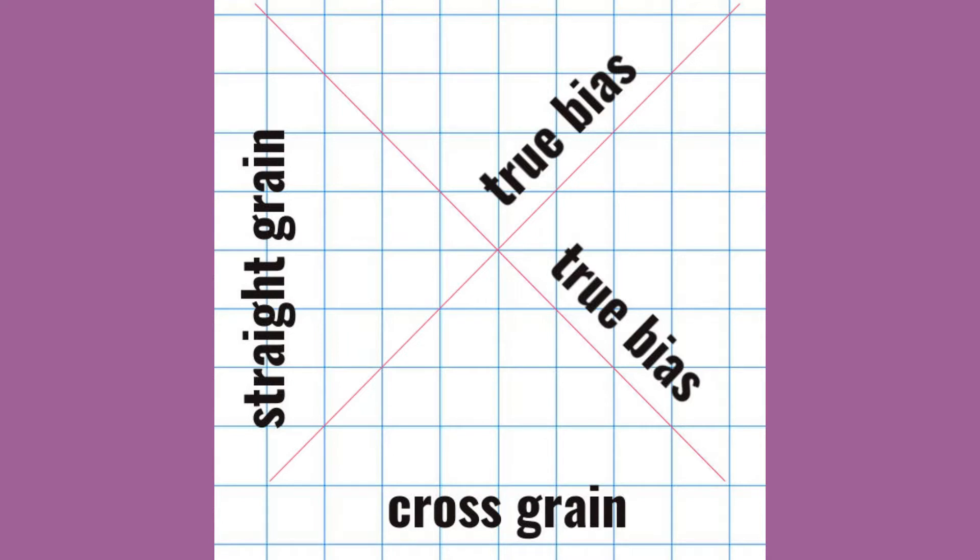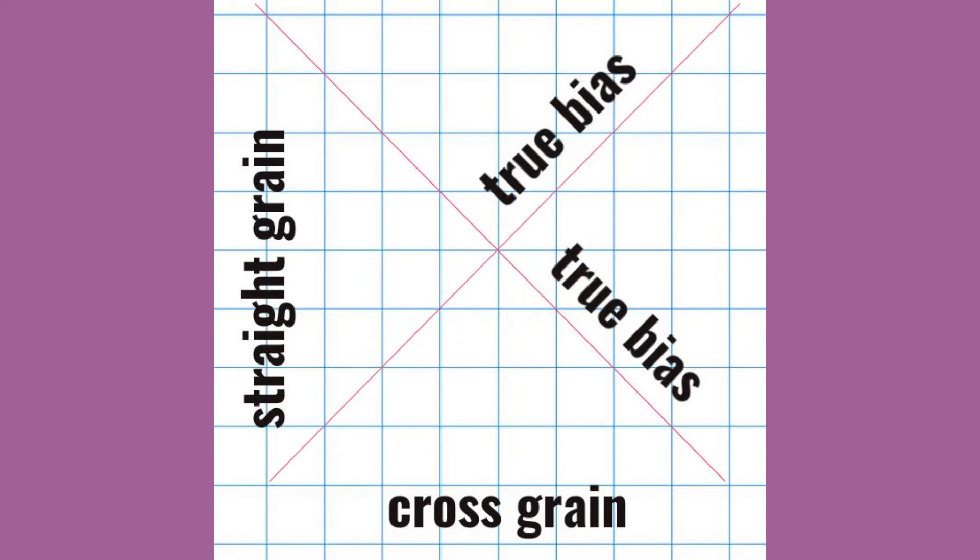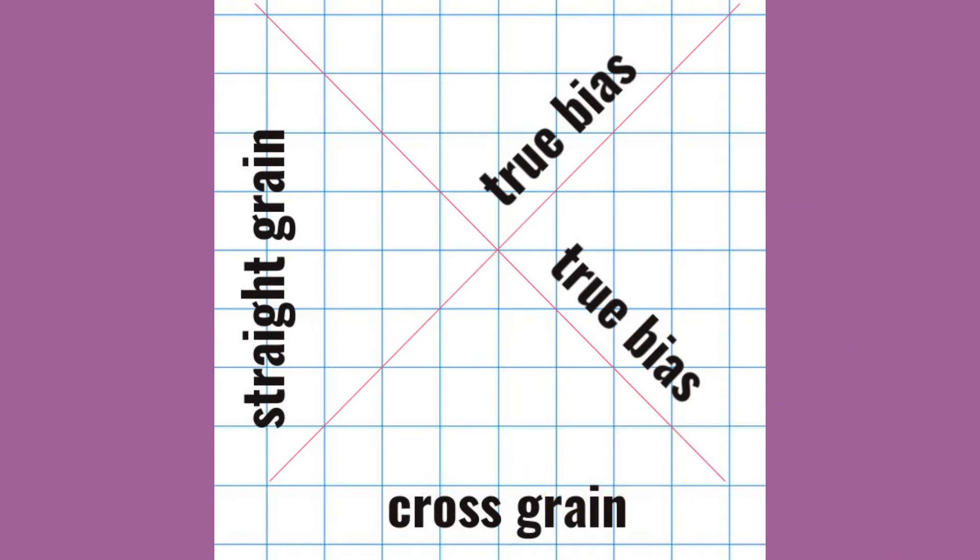The straight grain is parallel to selvedges and the cross grain is perpendicular to selvedges. The bias is running at any angle to the straight and cross grains. But the true bias refers to the 45 degrees angle exactly. Any woven fabric has two true biases perpendicular to each other.